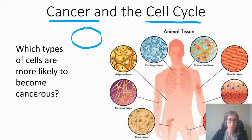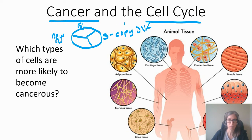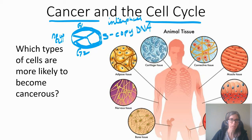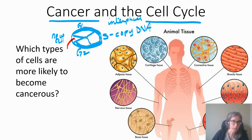The cell cycle starts with a brand new baby cell. The previous cell did mitosis, made two cells, and here is one of the new cells. It goes into the G1 phase first, where it usually grows and does life things. Then it does synthesis, which is when it copies its DNA. The DNA is all uncoiled through these phases — these are both parts of interphase. Interphase includes G1, S, and G2, and then finally we have mitosis.